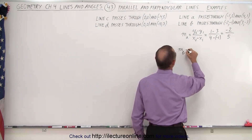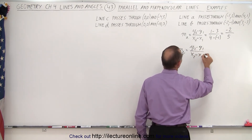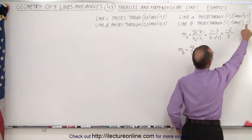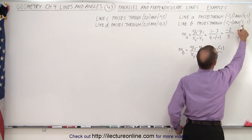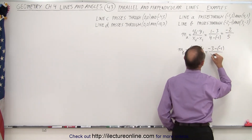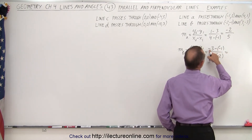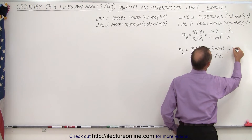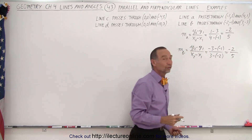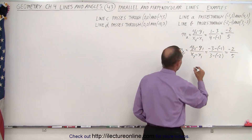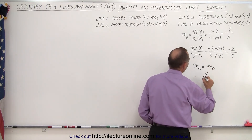Now let's try line B. The slope for line B is the difference between the two Y values divided by the difference between the two X values. So we have negative 3 minus negative 1 over 3 minus negative 2. Negative times a negative is a positive, so negative 3 plus 1 is negative 2, and 3 minus negative 2 is 3 plus 2, or 5. Notice the two slopes are equal to each other, so therefore slope A must equal slope B, and therefore they are parallel.